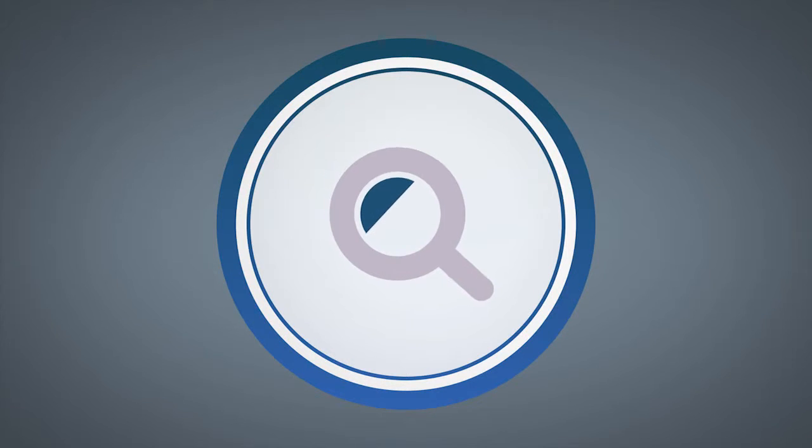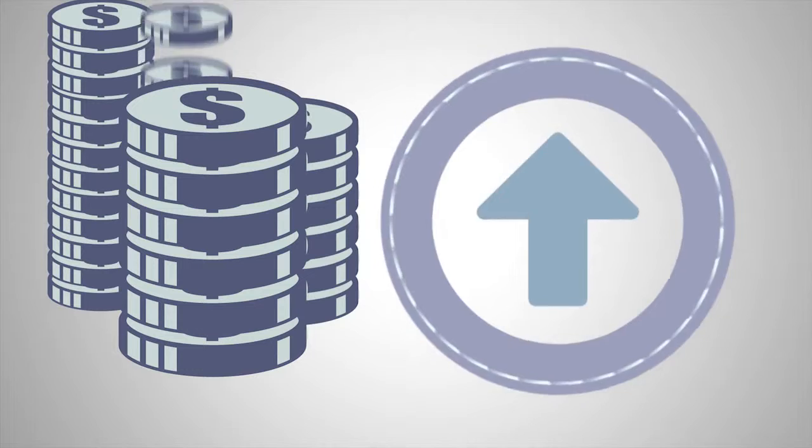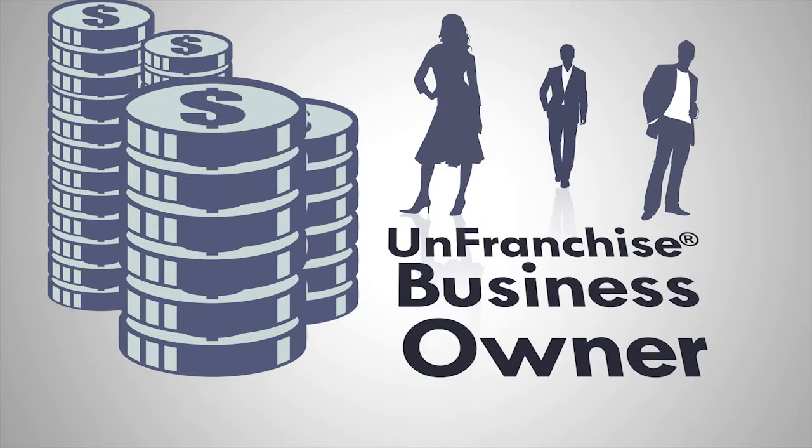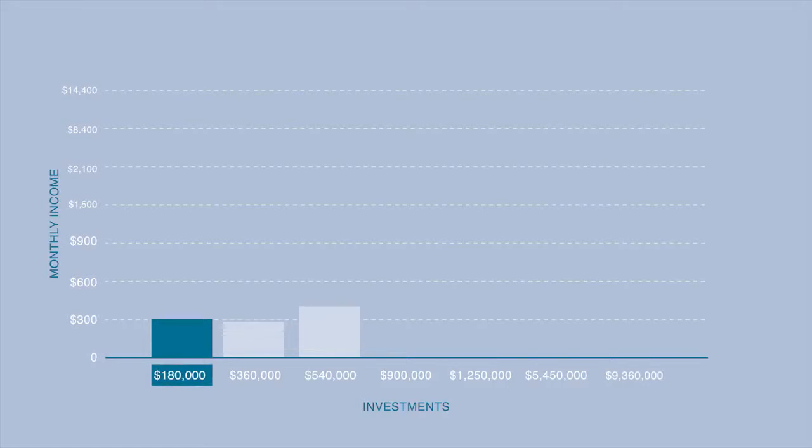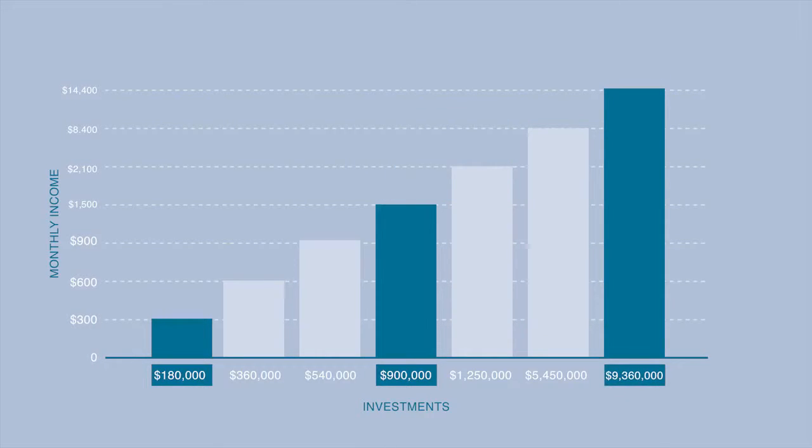Let's examine the equivalent amount of money you would need to invest in order to create a similar income stream to what you could create as an unfranchise owner. You would need to invest $180,000 to earn $300 per month, $900,000 to earn $1,500 per month, and $9.36 million to earn $187,200 per year.